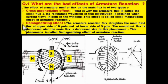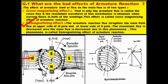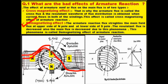The second major effect is called the demagnetizing effect. What happens here is that the resultant flux density waveform becomes poor. Because of this, distortion of flux is created. The resultant flux density is tilted and shifted, as you can see on the screen. The flux waveform is shifted in this way.